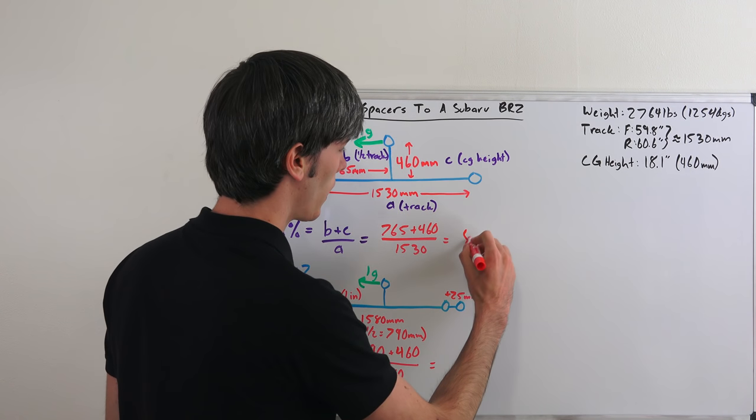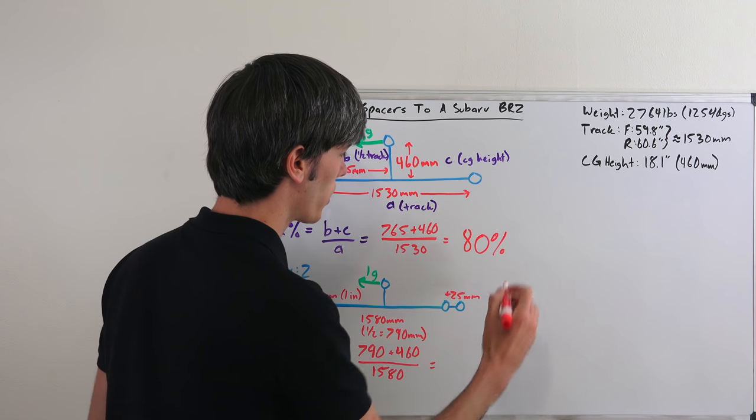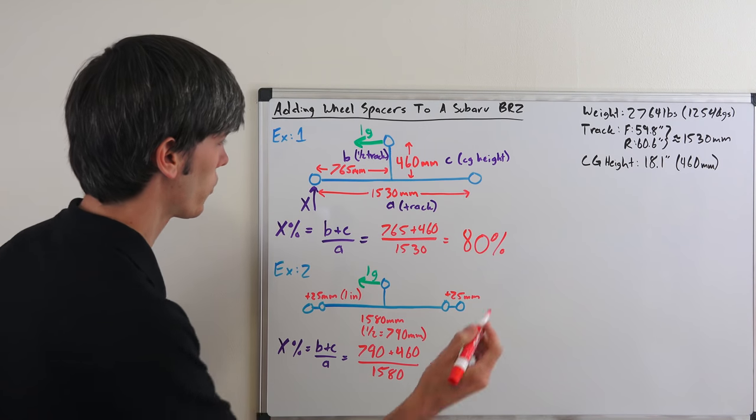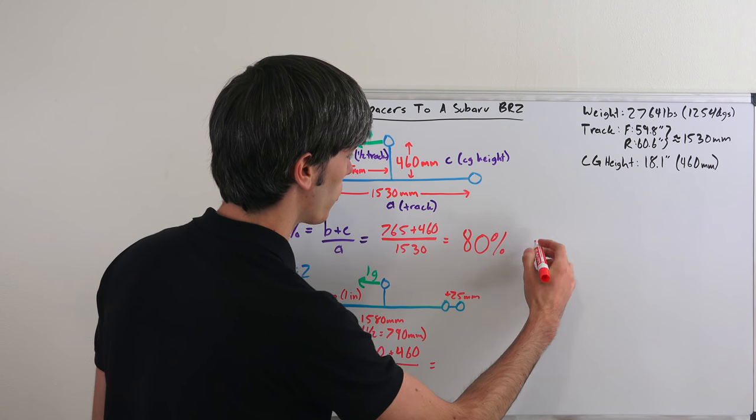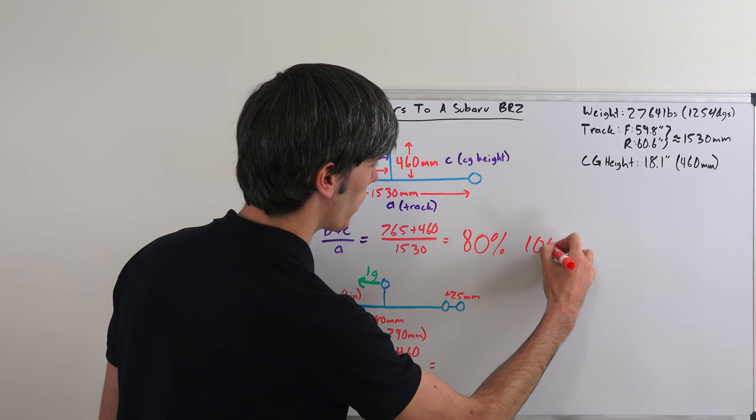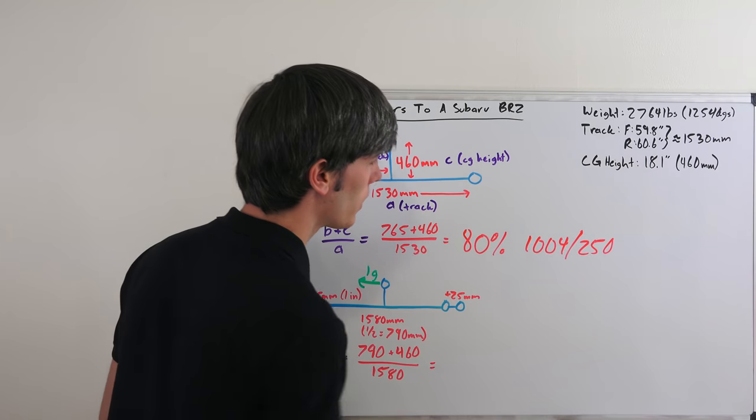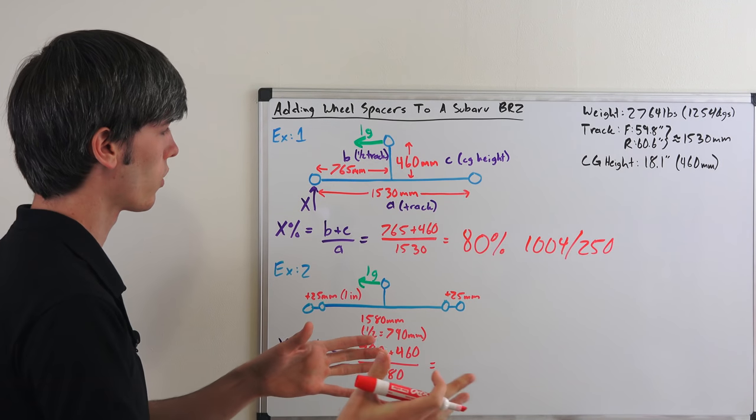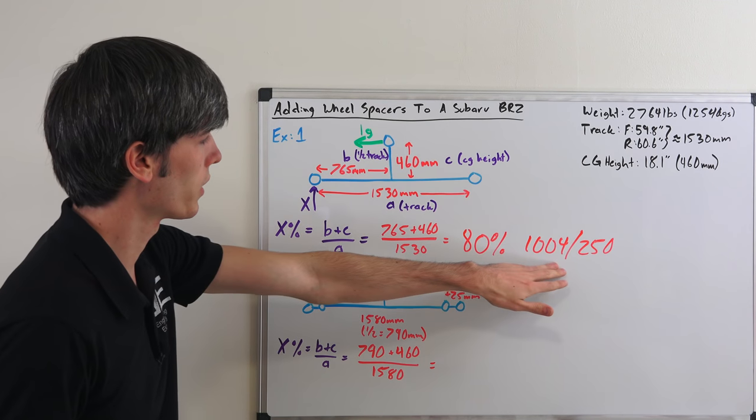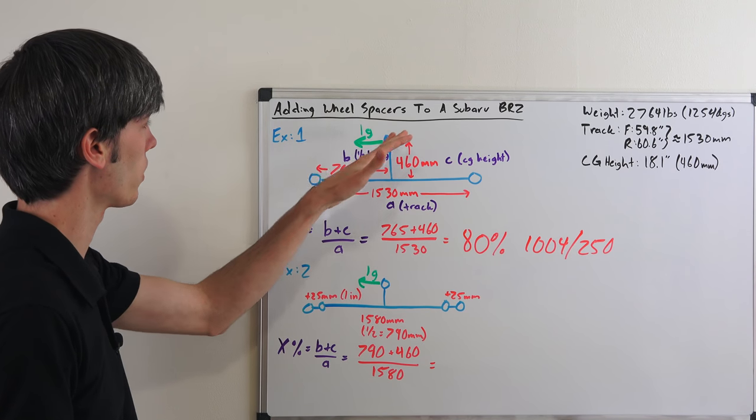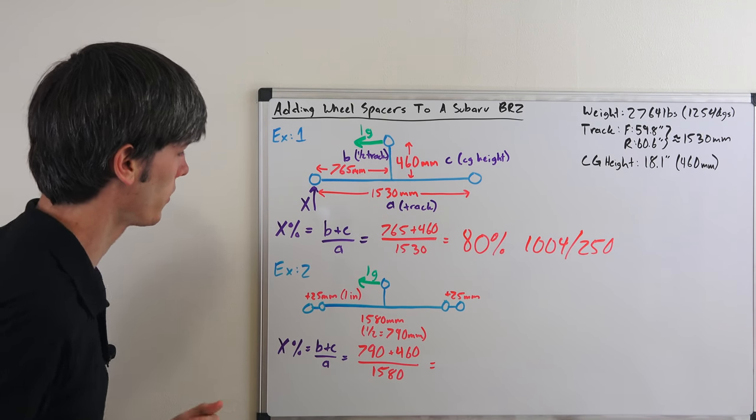Well that gives us a percentage: 80% load transfer going to that left side. So if you multiply that 80% by 1,254, that gives you 1004 kilograms on one side and 250 kilograms of load on the other side. So that's what your loading is going to look like under 1G cornering with a Subaru BRZ with the stock setup.